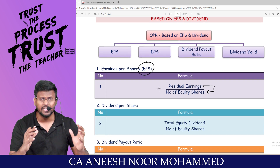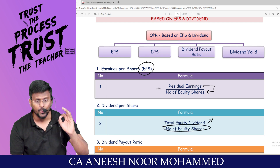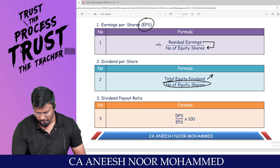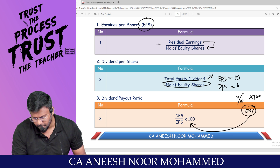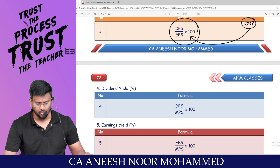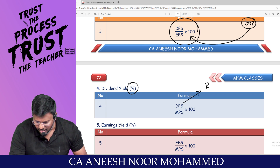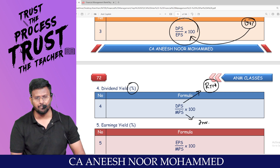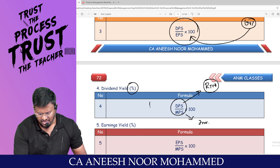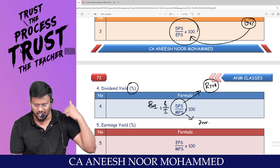From EPS, the company distributes dividends: total dividend divided by total equity shares gives dividend per share (DPS). If EPS is 10 rupees and DPS is 6 rupees, dividend payout ratio is 6 divided by 10 into 100 = 60%, which is DPS divided by EPS into 100. Dividend yield equals DPS divided by market price per share (MPS) — return divided by investment.